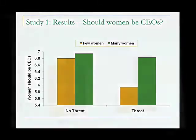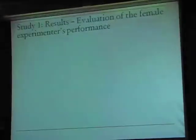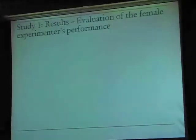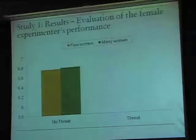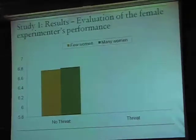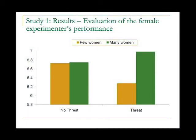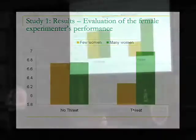The question is: what are the consequences of this? When we look at people's evaluations of the experimenter — this woman they think is an MBA student aspiring to enter the business world — when the system justification motive isn't activated, there's no effect of learning there are few or many women. But when the system justification motive is strengthened, people give the research assistant worse evaluations that they believe are being mailed directly to her professor to form the basis of her grade. They rate her as less likable, less professional, less competent, and say she did a worse job running the study.